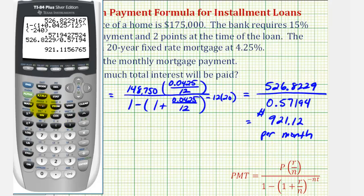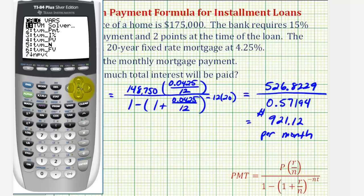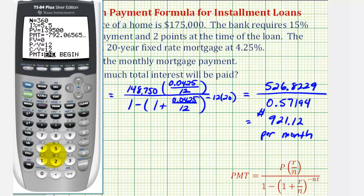So we're going to press the apps key, enter for finance, enter for TVM solver. N is the number of months over the 20-year period, 20 times 12 is 240. The interest rate is 4.25%. The loan amount or present value is 148,750. We'll come back to the payment. The future value would be 0 when the loan is paid off. Payments per year is 12, compounds per year is 12, payments are at the end of the month.